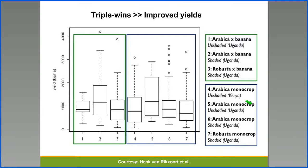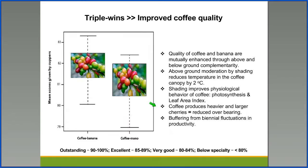Secondly, intercropping coffee with bananas improves yield. We notice that when Arabica and banana are shaded, the yields are almost the same quantity derived as when Arabica coffee is monocropped.